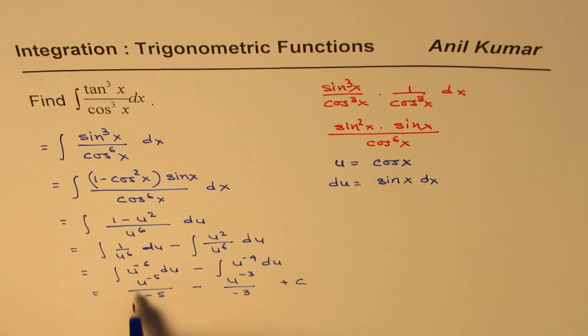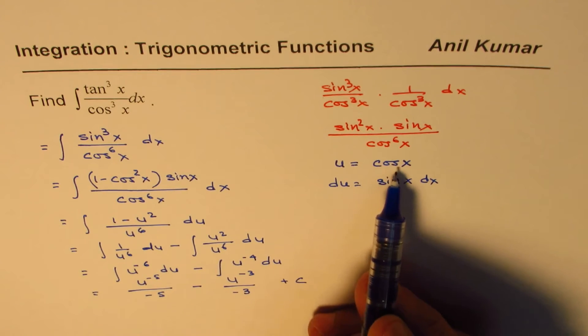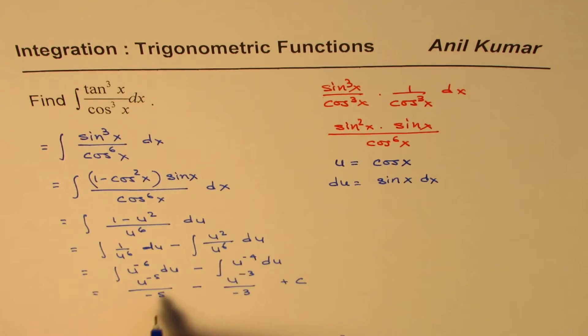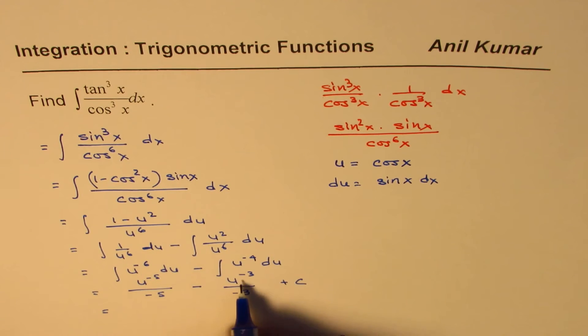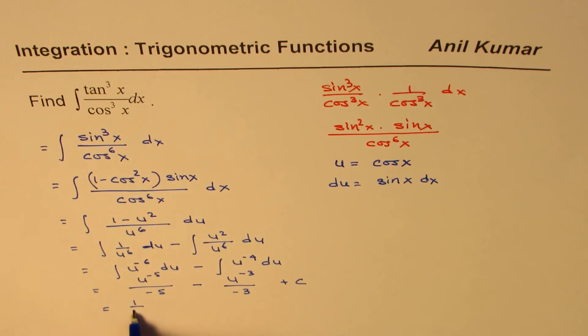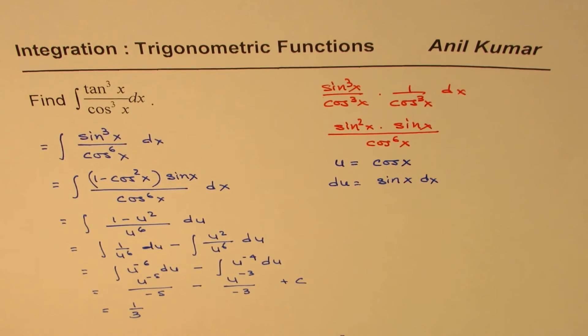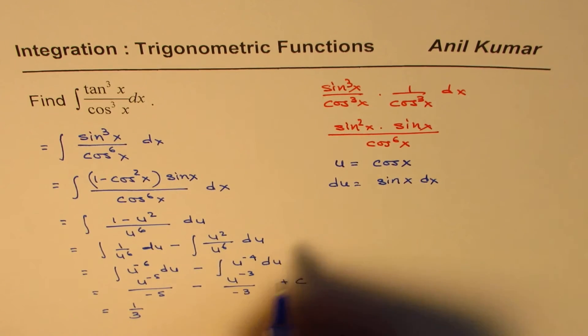So, u is cos x, so we will write this as, we can rearrange, let me write this on the first side, so this will be 1 over 3, because minus minus becomes plus, and u is cos x,